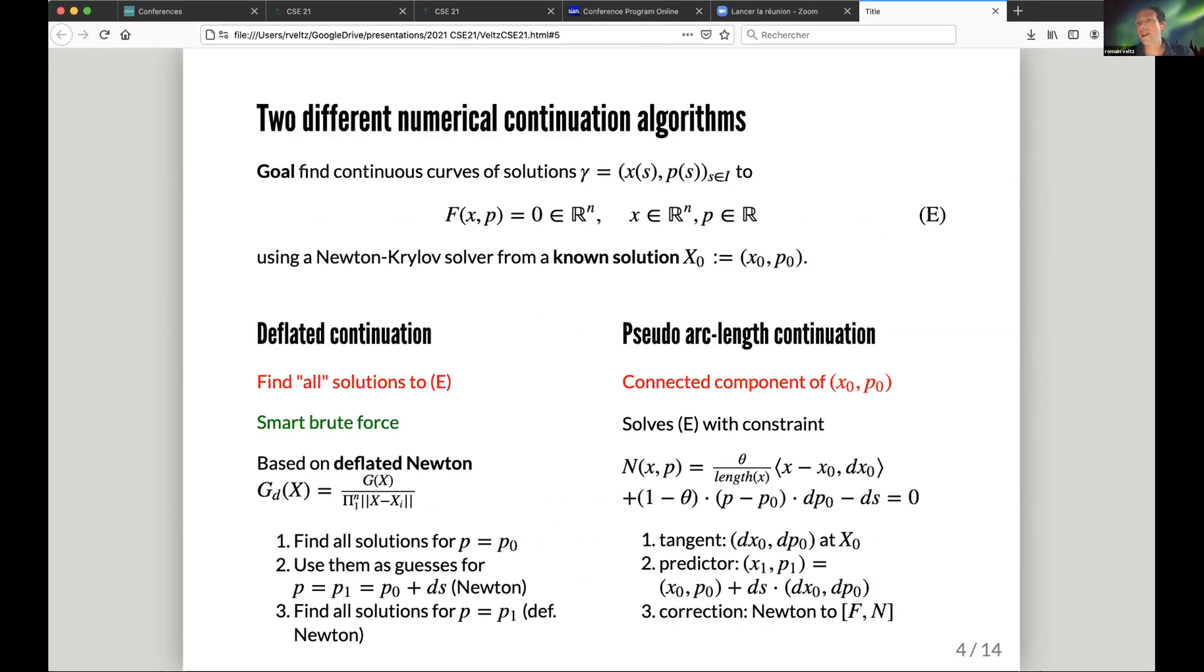Now I'm going to present the two main algorithms for computing bifurcation diagrams of stationary solutions. So the equation is F(x, p) = 0. F is n-dimensional, the unknown x is n-dimensional, p is a scalar, so it's basically computing a sub-manifold of dimension one.